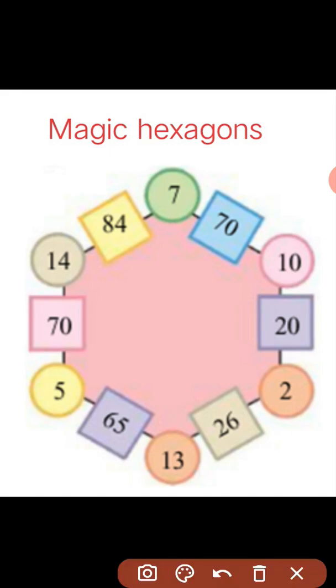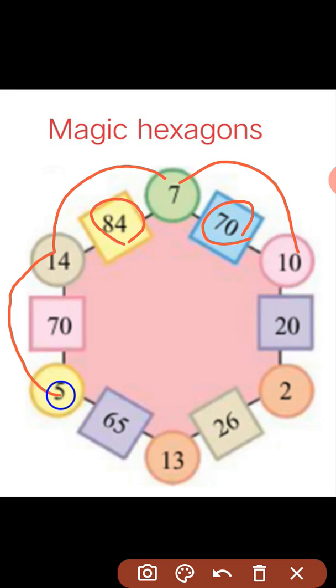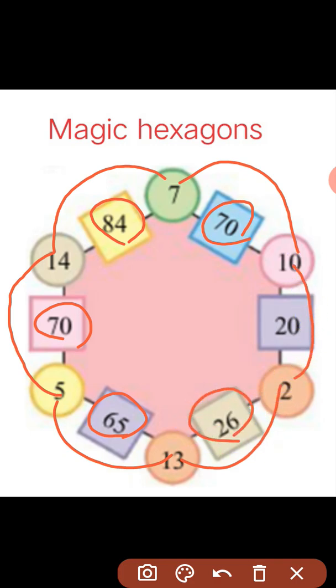Say for example when you multiply the numbers in the circle 10 with 7, 10 into 7 you are getting the number inside the box that is 70. Likewise 7 into 14 you are getting the answer as 84. 14 into 5, 70. 5 into 13, 65. 13 into 2, 26. 2 into 10, 20. So this is called as magic hexagon.